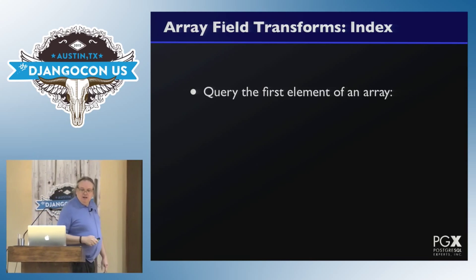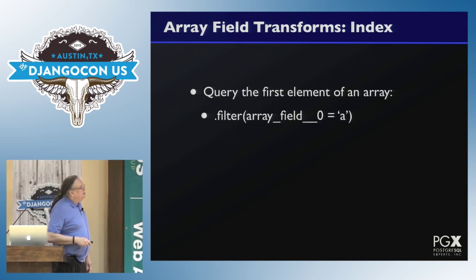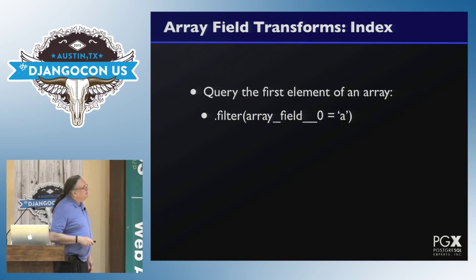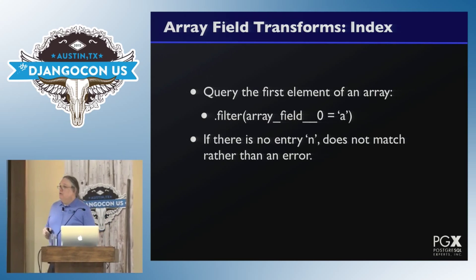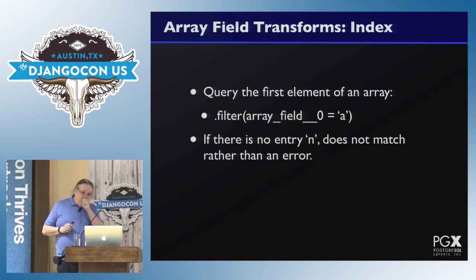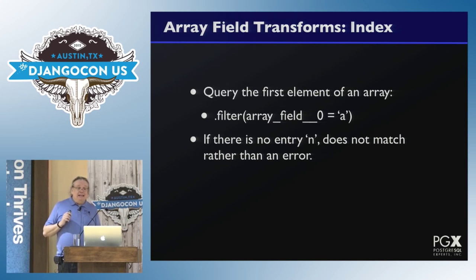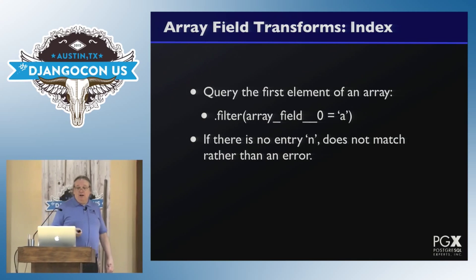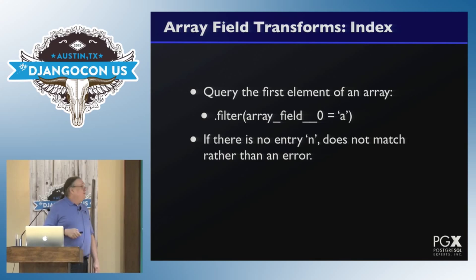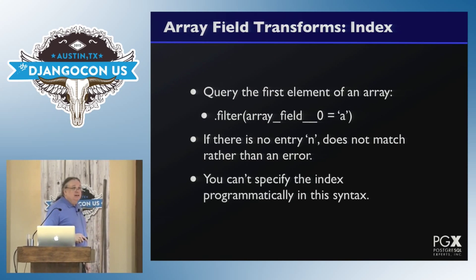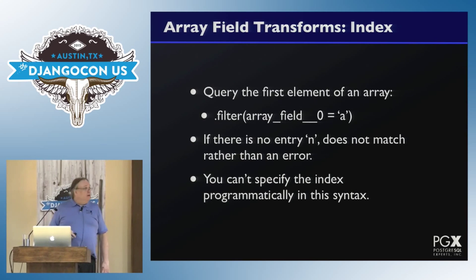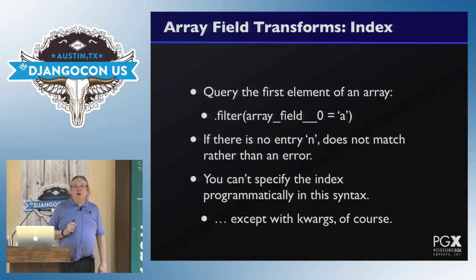You can also apply transformations to the array, such as an index. For example, '__0' filters on everything whose first element is the string 'a'. If there's no entry at index zero — for example the array is of length zero — it doesn't match, it simply returns false. There's no error. So if you put five million there and there are no five-million-length arrays, you'll just get back false for everything. Note that you can't specify the index programmatically directly — it's baked in as a zero. You can do string substitution using Q objects to work around that.